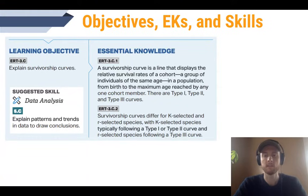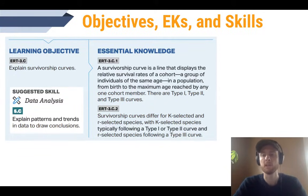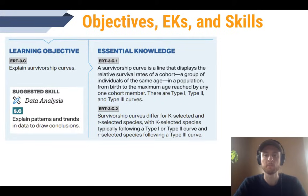Let's take a look at our objectives, essential knowledge, and skills for the day. Our objective is to be able to explain survivorship curves, and we need to know that they show survival rates for a cohort — a group of individuals all born at about the same time. We also need to know there are three different basic trends: type one, type two, and type three. K selected species show type one survivorship due to their high parental care, whereas R selected species show type three survivorship due to their lack of parental care — but they have many more offspring to account for that low survivorship. The skill we'll be practicing is data analysis.